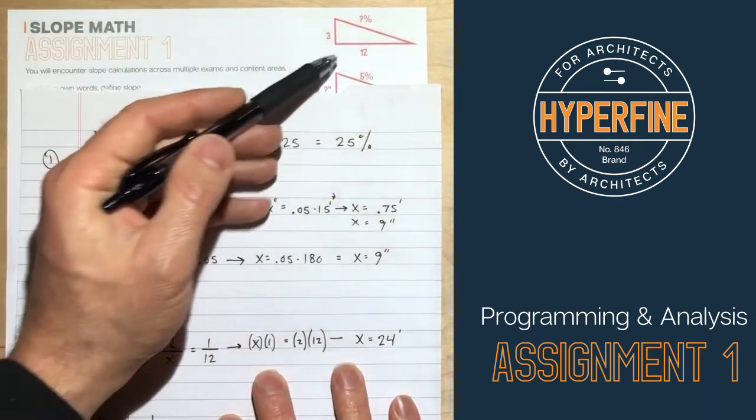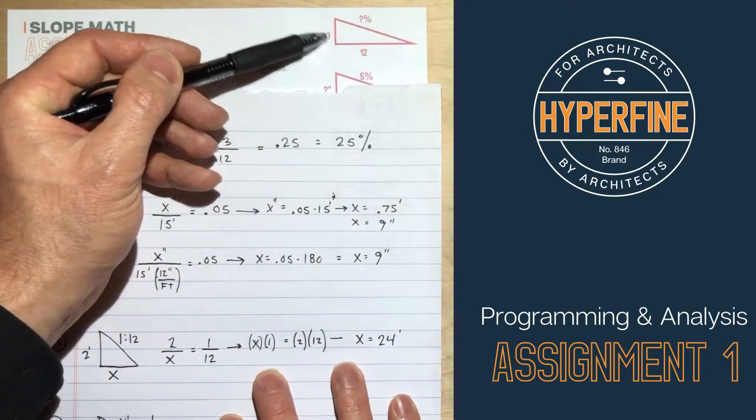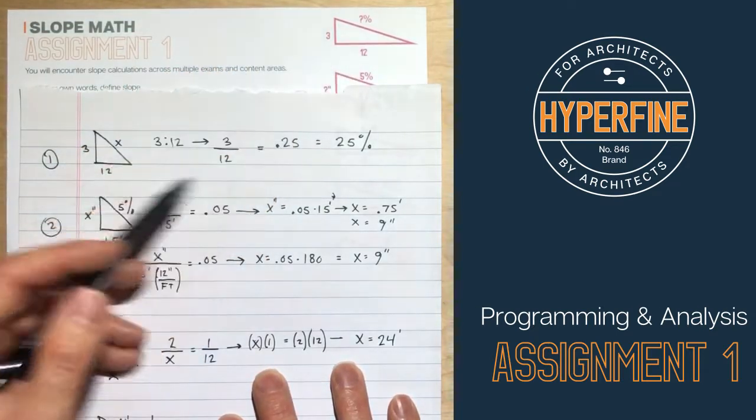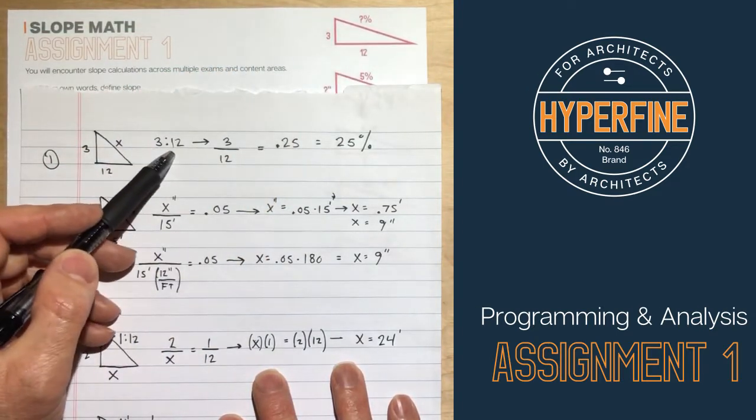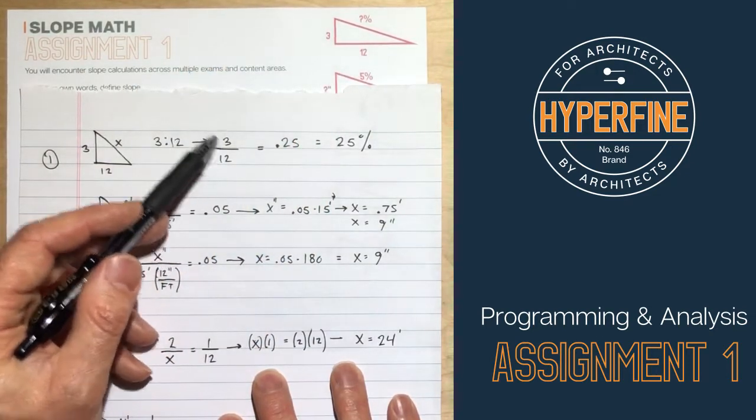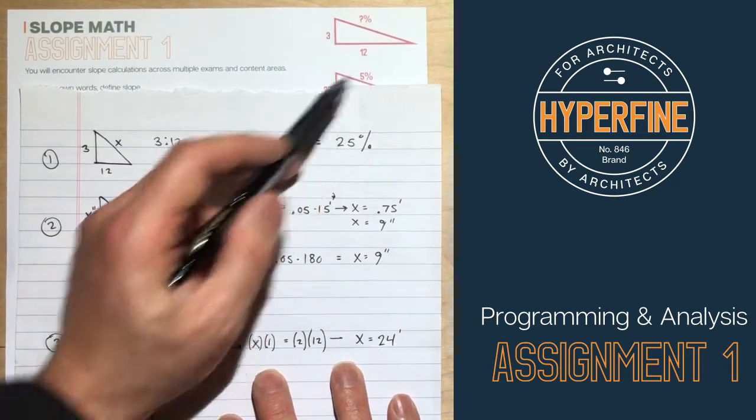The slope is just rise over run. So rise is the vertical, run is the horizontal. It's not given to you in any unit. So it doesn't matter. That could be three inches or three feet. And that could be 12 inches or 12 feet. But if you see it like this, you can always just rewrite it as a ratio of three to 12, which is what you would normally see up on this diagonal part. So as a ratio, that just gets rewritten as three divided by 12 equals 0.25. That slope is 25%.